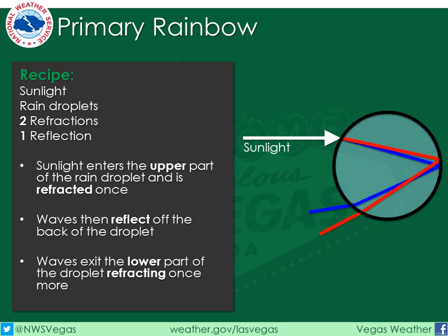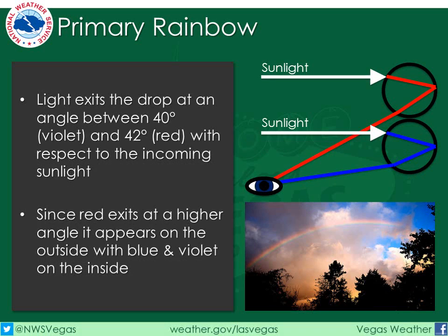Note that the angle between the incoming sunlight and the red wave is larger than that of the blue. Because of this larger angle with the red wave, when viewed with the human eye from ground level, the color red appears higher in the sky than the blue or violet waves, which exit at lower angles. So in a primary rainbow, red appears on the outside with blue and violet on the inside.